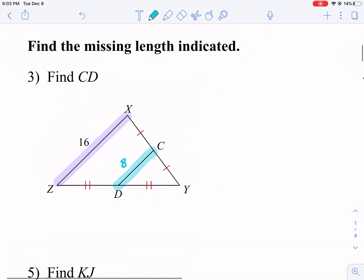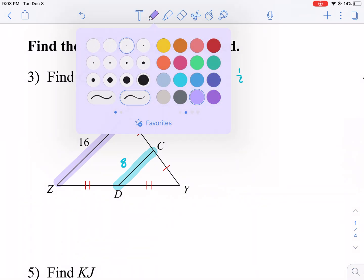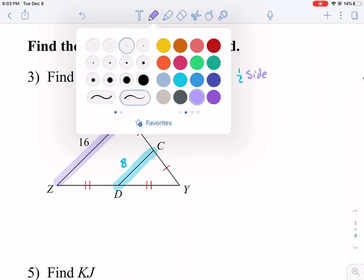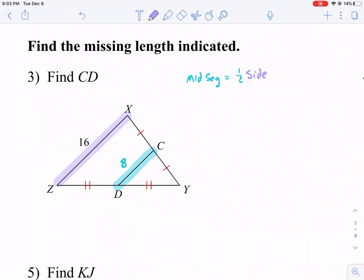Another way to write this out is you can say the mid-segment equals one half and we write the long side. So we have one half the side. Or if we solve for the side, we can say two times the mid-segment equals the side.